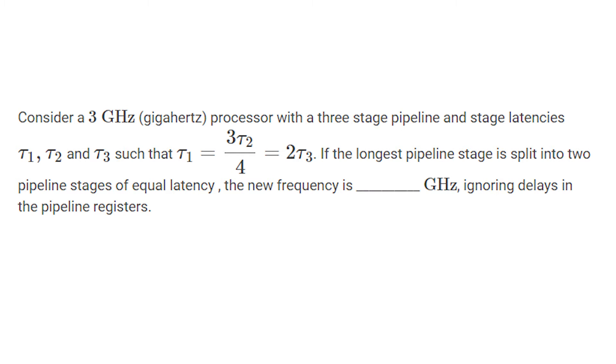Consider a 3 GHz processor with a 3 stage pipeline and stage latencies tau1, tau2, tau3 such that tau1 is equal to 3 by 4 tau2 is equal to 2 tau3. If the longest pipeline stage is split into 2 pipeline stages of equal latency, the frequency is dash gigahertz, ignoring delays in pipeline registers.